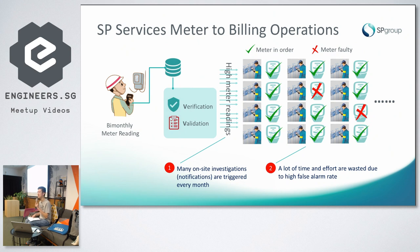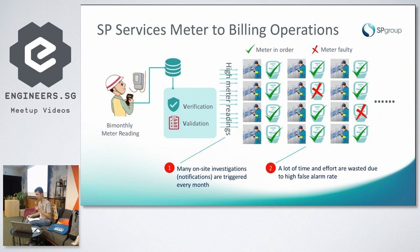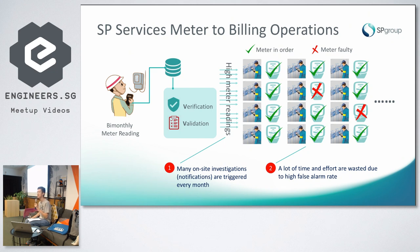If the meter reading is too high, it might be caused by a faulty meter, and because of that, technicians need to be sent to the premises to do on-site investigation. But there are many times whereby the meter readings are high due to someone moving into the premise, so the meter is not faulty. This means that the trip is wasted because it incurs manpower and other costs. My project is to build a predictive machine learning model to detect these new move-in events. By integrating this model into the daily operational flow of a meter irregularity investigation, this can help the operations team identify if the meter reading is due to a new move-in, and this will reduce the false positives.